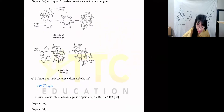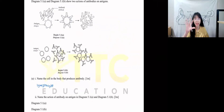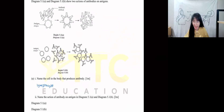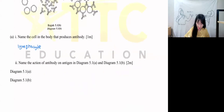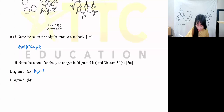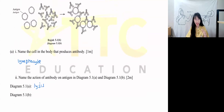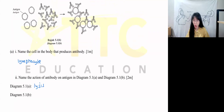Looking at figure 5.1a, you can see that they break down the antigen. The breaking down process is called lysis. Figure 5.1b shows that the antigens stick together — when they glue together, it is called agglutination.